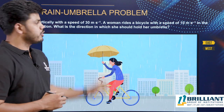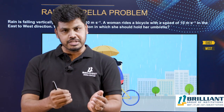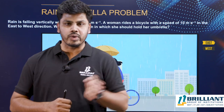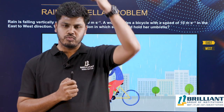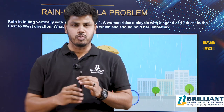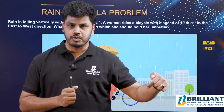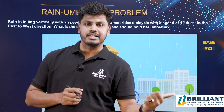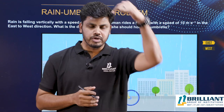We can understand here you are given two velocities — one is the velocity of the rain and the second is the velocity of the woman riding a bicycle from east to west. We actually hold our umbrella just against the direction of velocity of rain usually. If rain is falling vertically downward, we hold our umbrella vertically upward. But when you move with respect to the rain, the velocity of rain with respect to you will be in another direction — it is no more vertically downward.